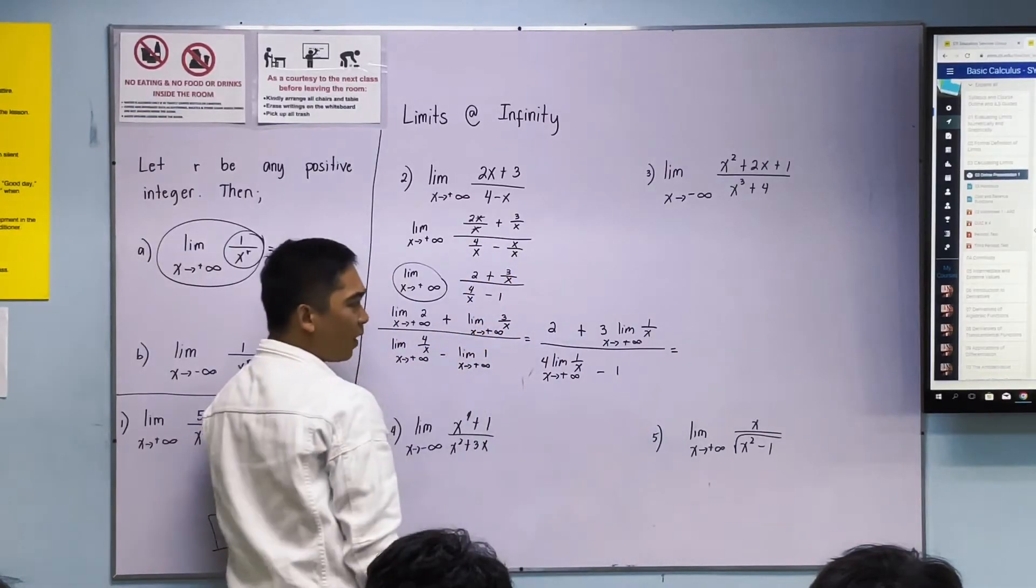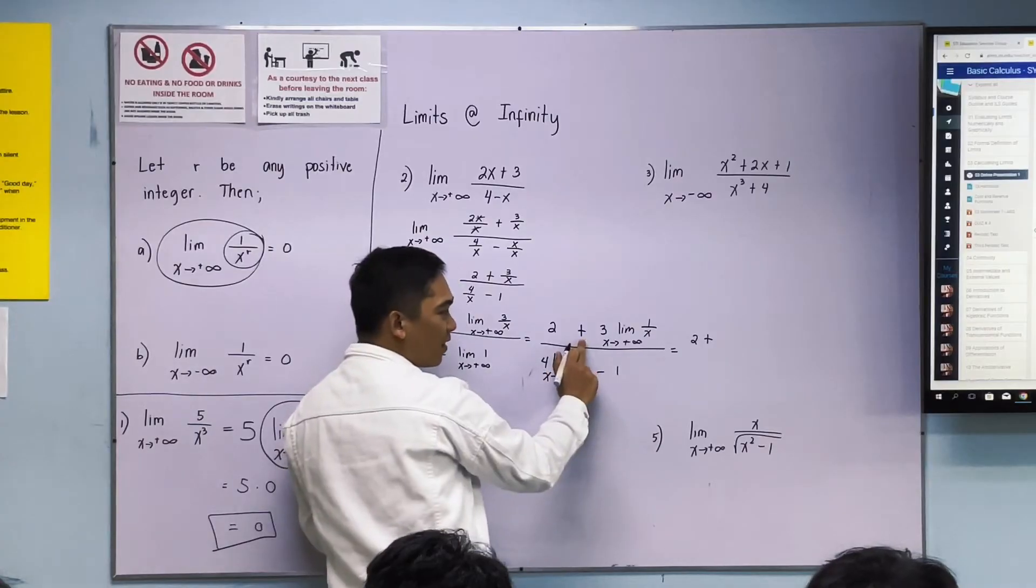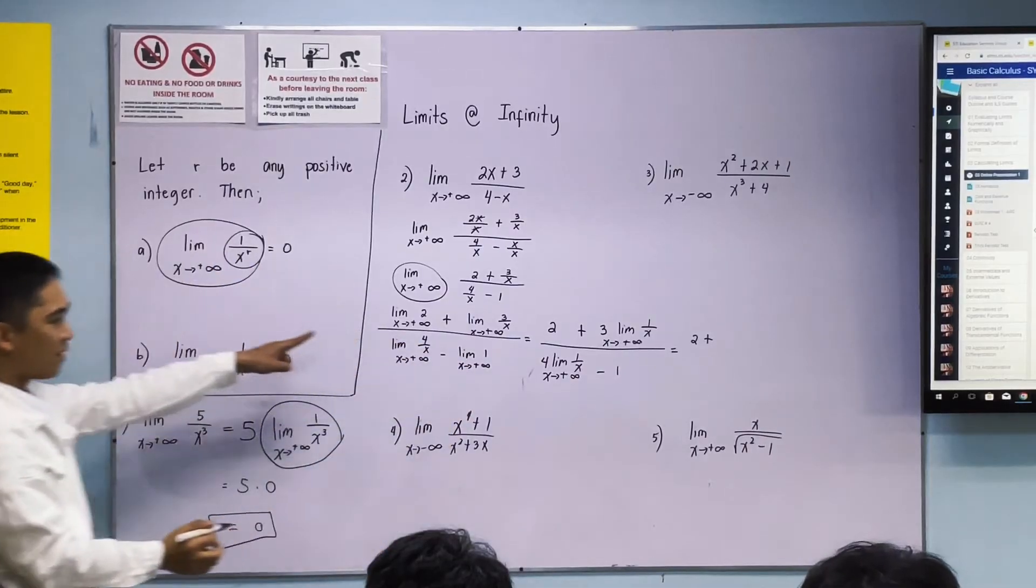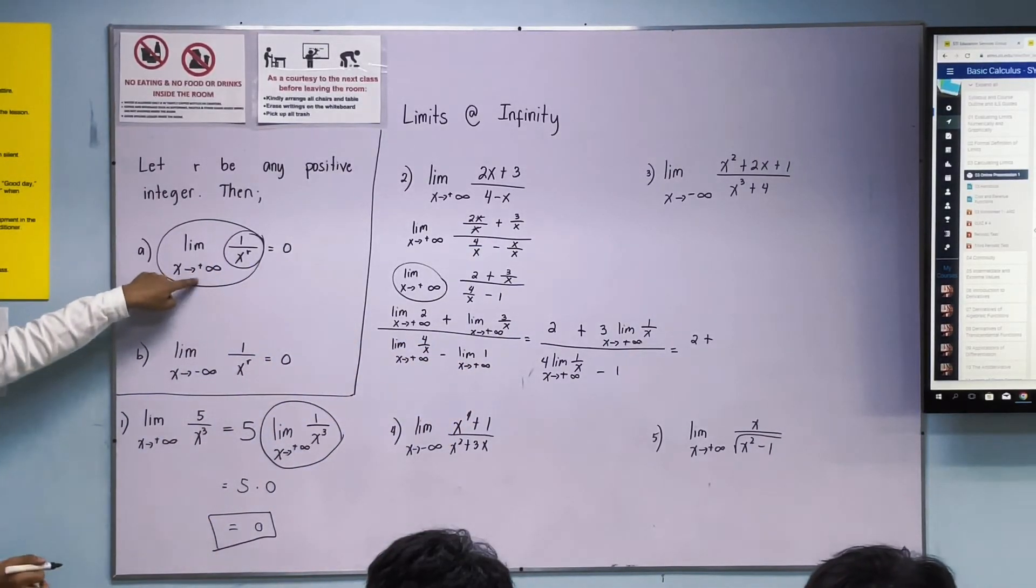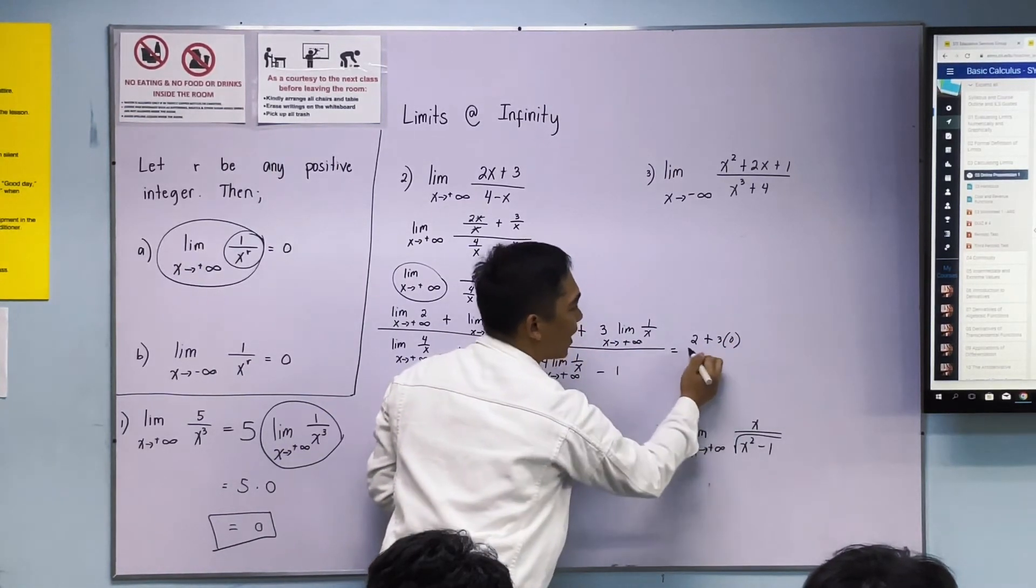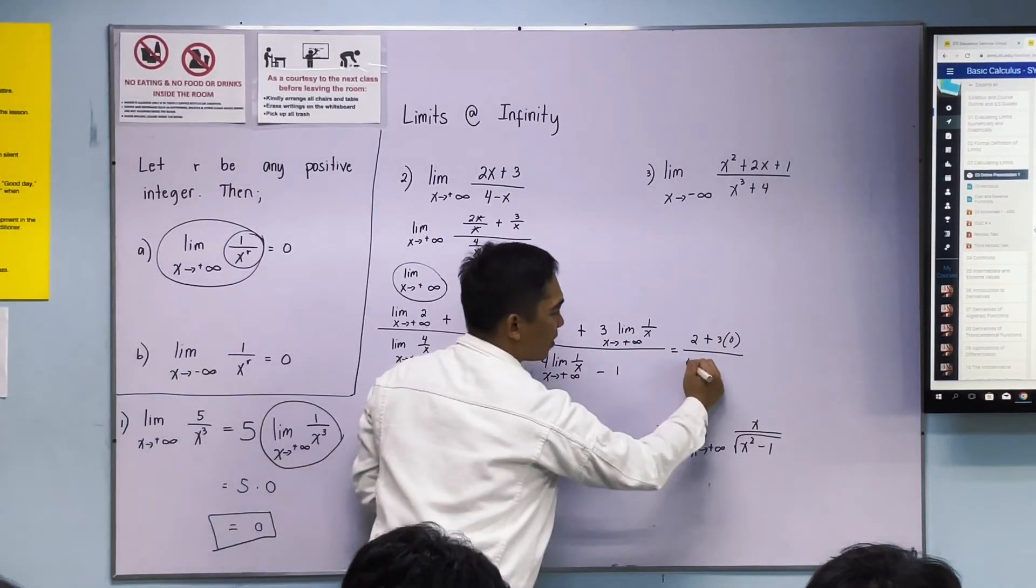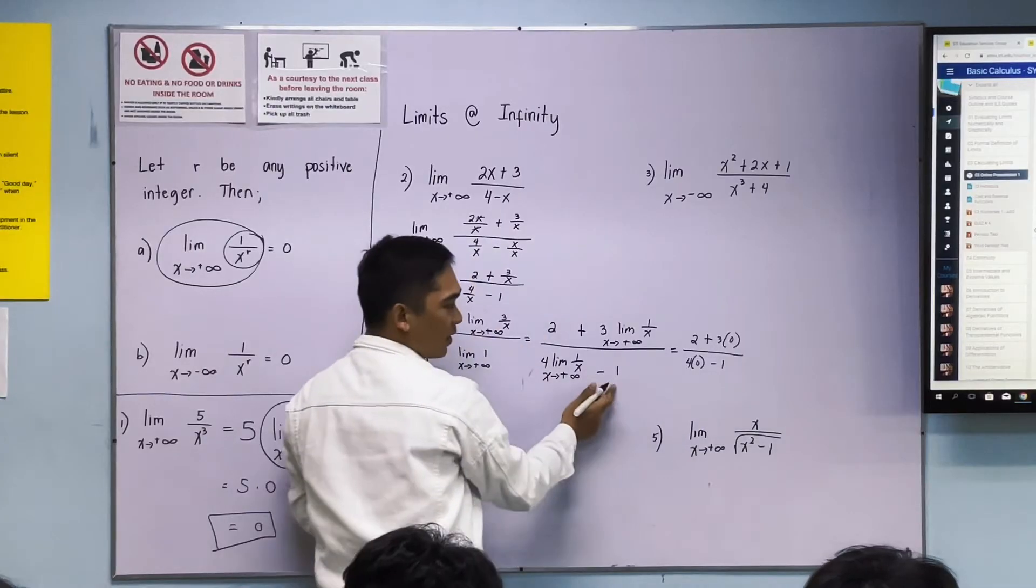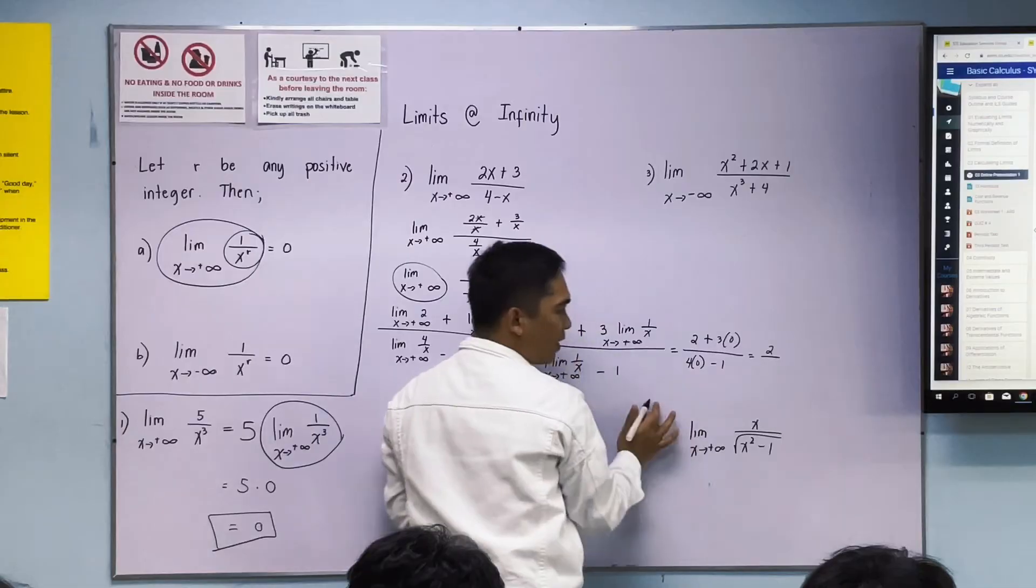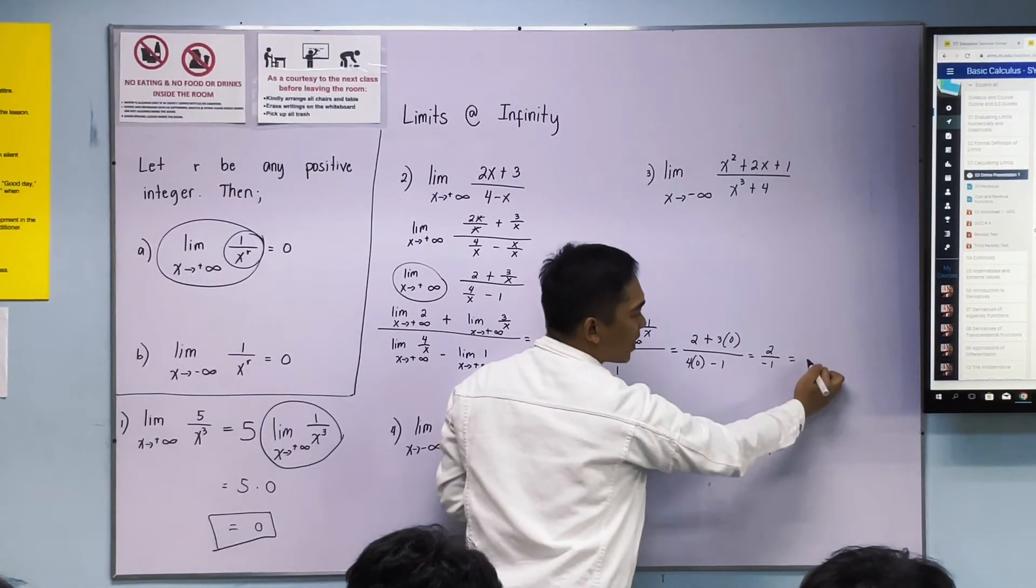Next, 2 we're okay with, plus limit of 1 over x as x approaches positive infinity. This will become 0. So 3 times 0 is 0. Over, this one: 4 times 0, minus 1. So we have 2 plus 0, that is 2, over 0 minus 1, negative 1. So the final answer is negative 2.